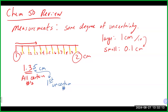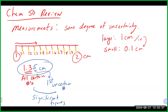When you make a measurement, you should always record all the certain numbers plus that very first uncertain number. When you do that, that is what we call significant figures. That means my number would have three significant figures in this particular case.